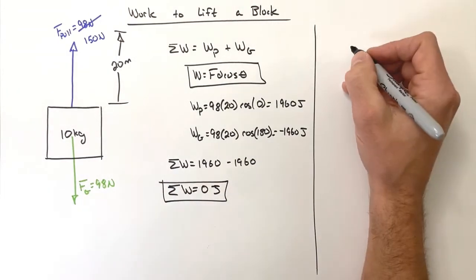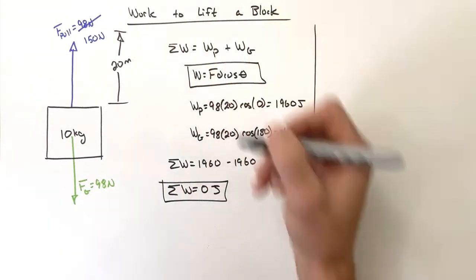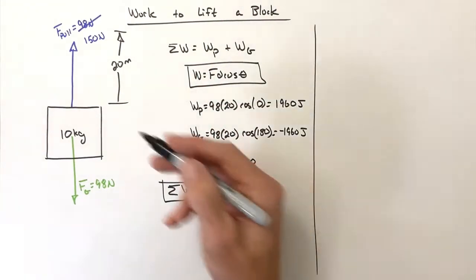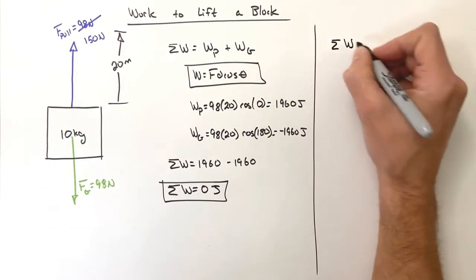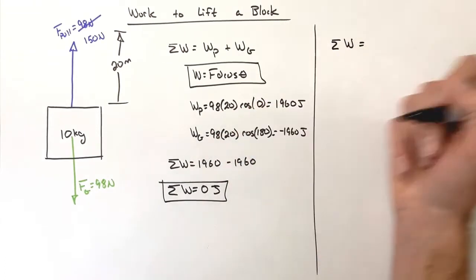So I want to go through and look at how that translates into work done. We're ultimately doing the same problem here, except now we have a different pull force upward, but I want to again work out the total work and the work by each individual force.